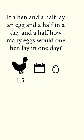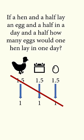So we have 1.5 hens that lay 1.5 eggs in 1.5 days. They think that if you scale everything down, you would get one hen laying one egg in one day. This is wrong.